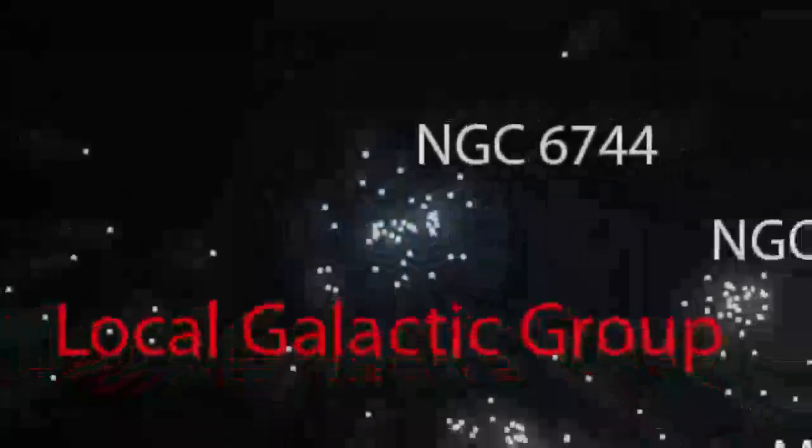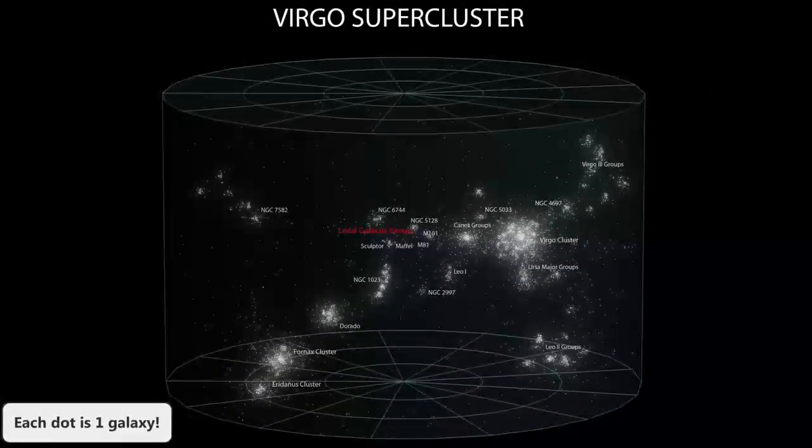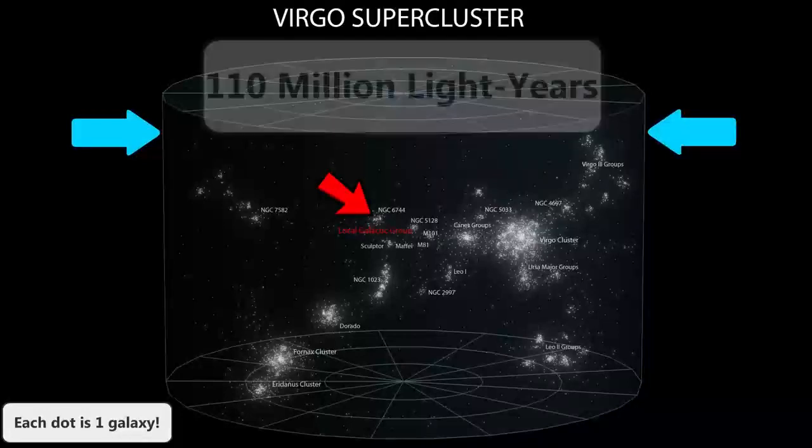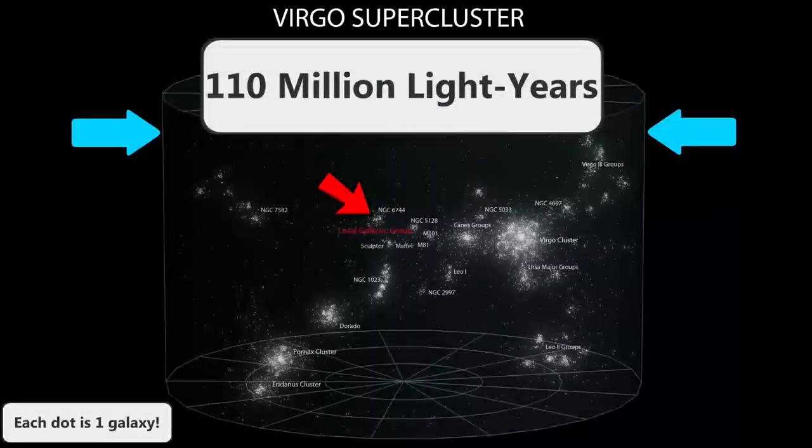But zooming out even further and we can see the Virgo supercluster, of which the local group here is just a tiny segment of. There are at least 100 other groups of galaxies just like our own local group inside of here, and the distance from one side to the other is a mind-numbing 110 million light years.